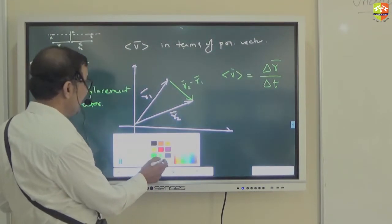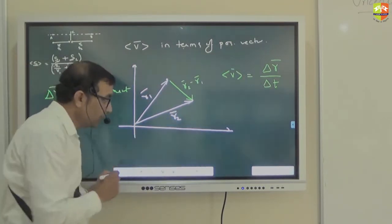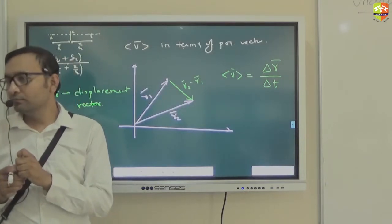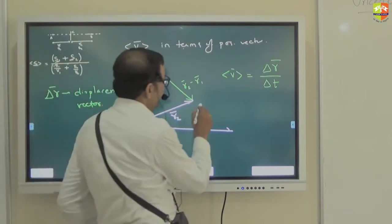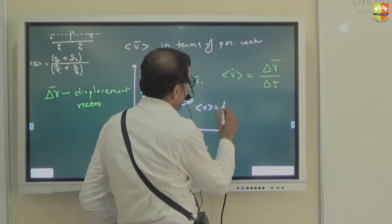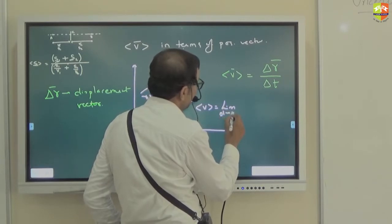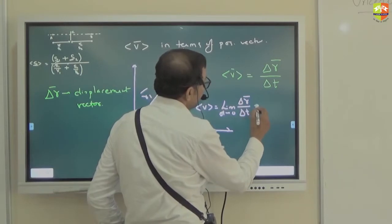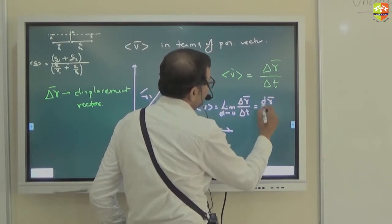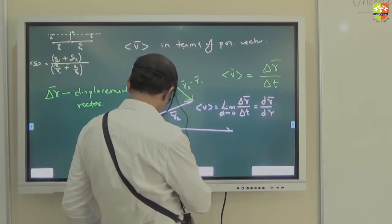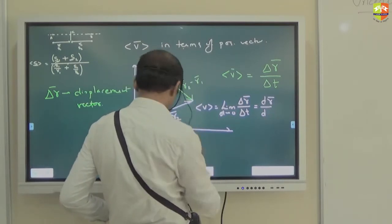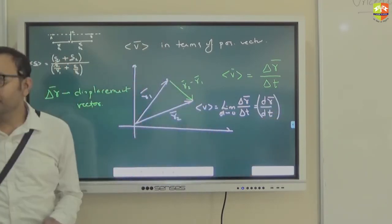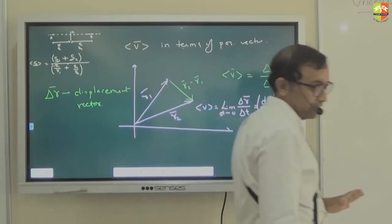Now, suppose I want to find out velocity at a particular moment. What should I do? I should decrease delta t to a very small value. So average velocity for the limit as delta t tends to zero will become instantaneous velocity — delta R divided by delta t, which becomes dR/dt. Rate of change of position vector is your velocity vector.